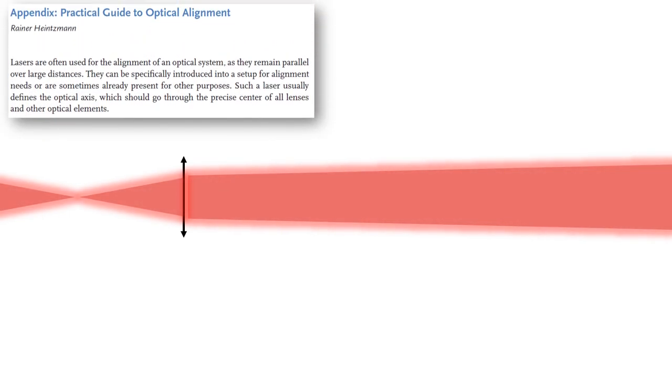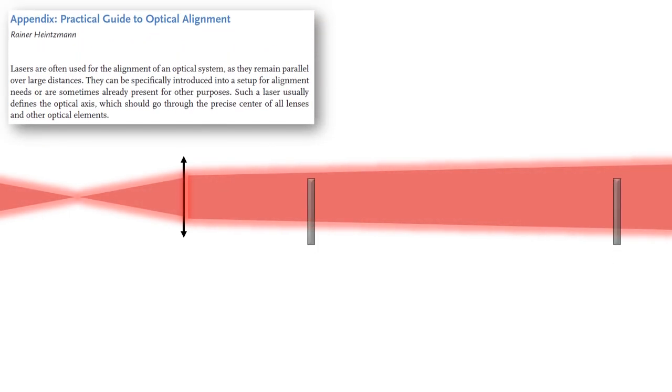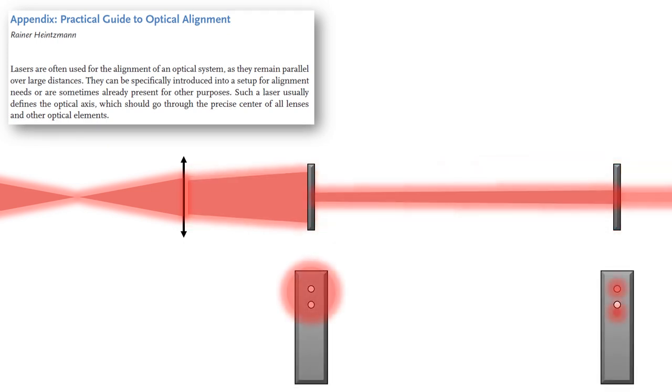A cheaper alternative is this arrangement: use two posts, each with two holes at the same location. Place the posts such that the upper holes are aligned with the center of your beam. If your beam is diverging, you will see the lower beamlet on the second post displaced. In contrast to a shear plate, you will have to account for quite some space in your setup though.